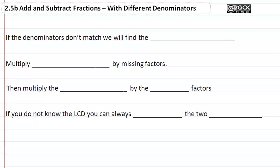2.5b: Add and subtract fractions with different denominators. If the denominators don't match, we will find the LCM, or in other words, now we're going to call that the LCD.